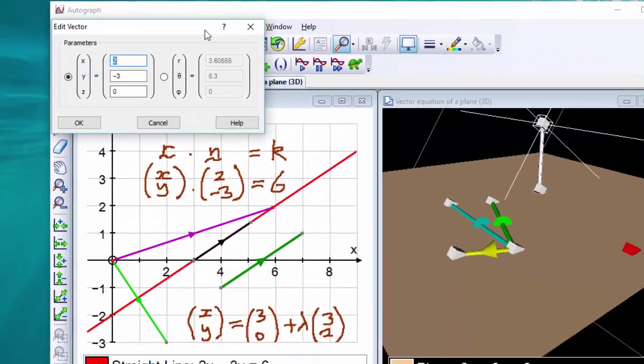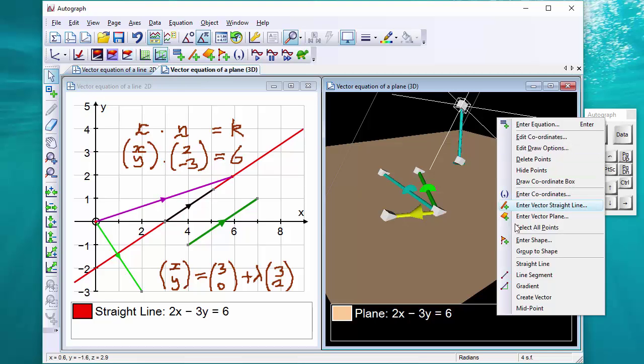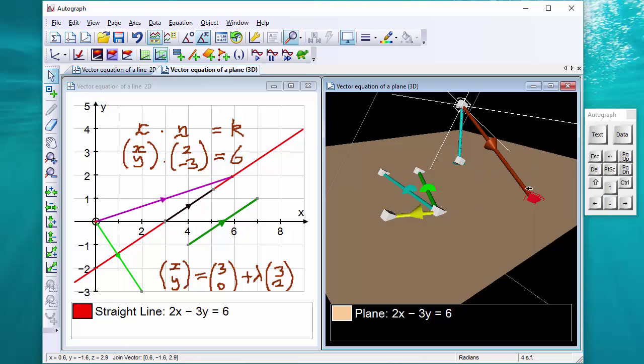This is a general point on the plane, and if I join a vector from here to here, then that is the vector r. And r dot n is a constant by exactly the same trigonometry that we were doing over here.